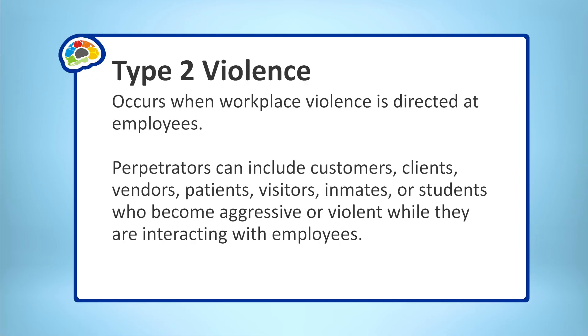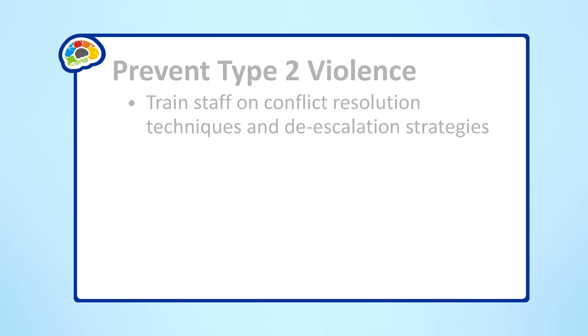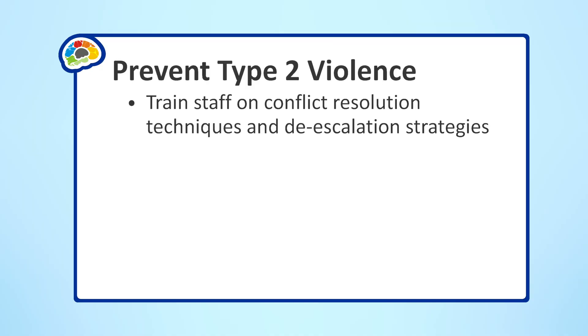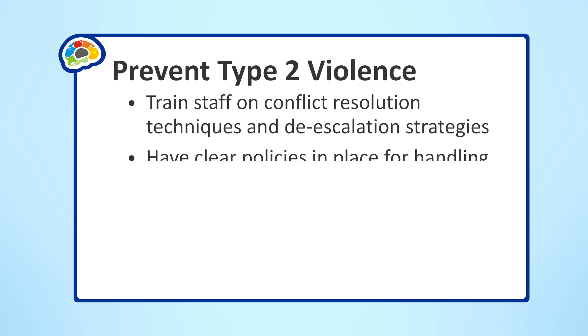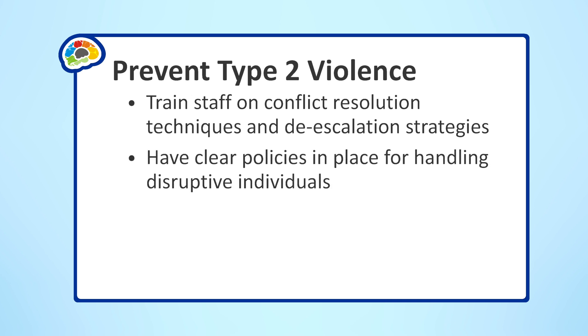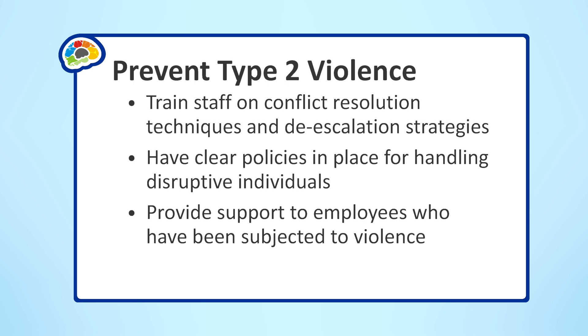Type 2 violence is workplace violence directed at employees. Perpetrators can include customers, clients, vendors, patients, visitors, inmates, or students who become aggressive or violent while interacting with employees. To prevent Type 2 violence, it's essential for employers to train their staff on work practice controls such as conflict resolution techniques and de-escalation strategies that will prepare them to manage potentially volatile situations. Additionally, having clear policies for handling disruptive individuals and providing support to employees who have been subjected to violence is crucial for maintaining a safe work environment.